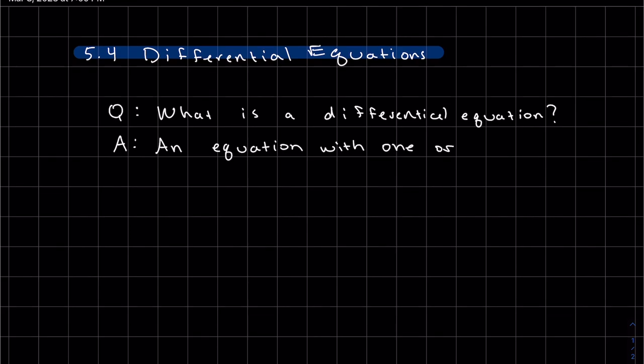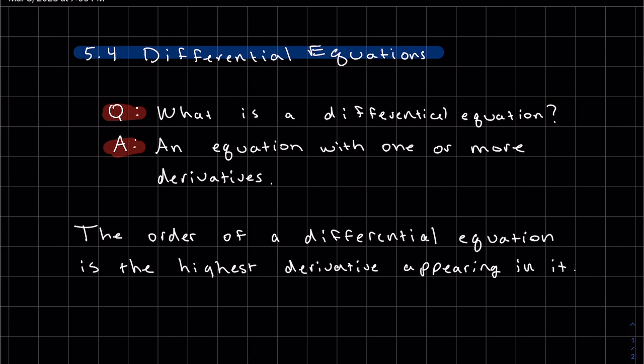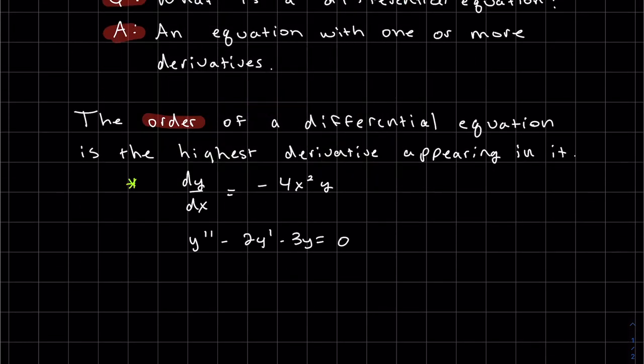The order of a differential equation is just the highest derivative that appears in the equation. So here's a couple examples. This only has the first derivative in it, so this is first order. Here we have just a different notation, but that is my second derivative, so this one is second order.